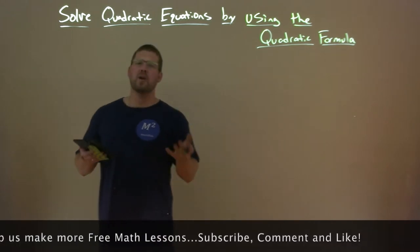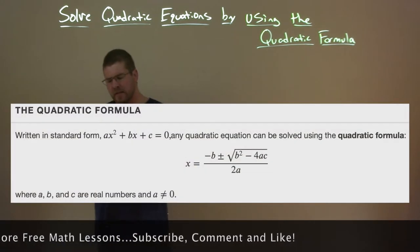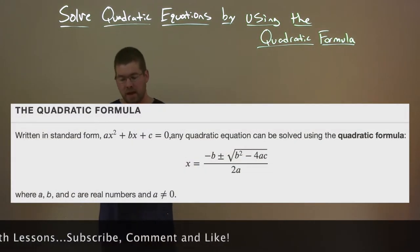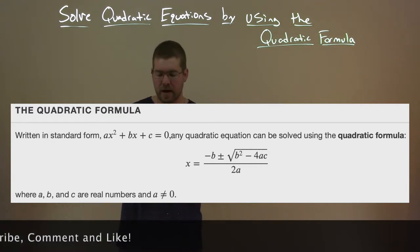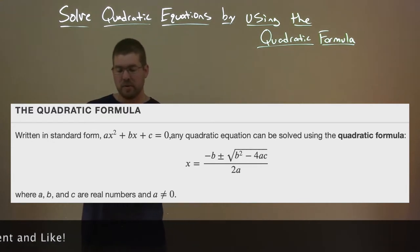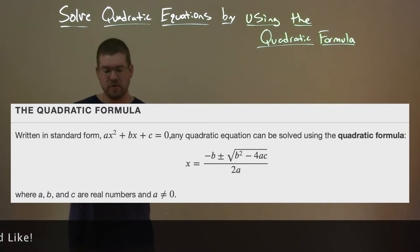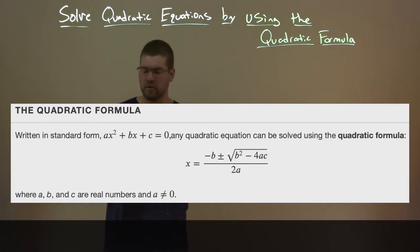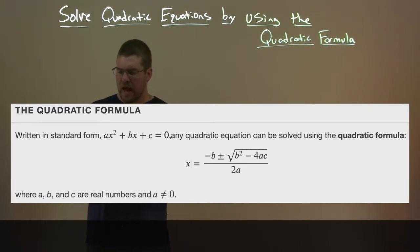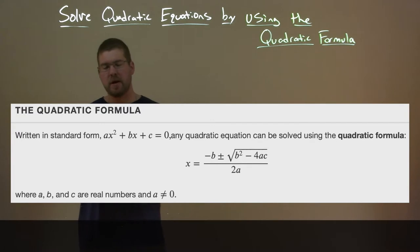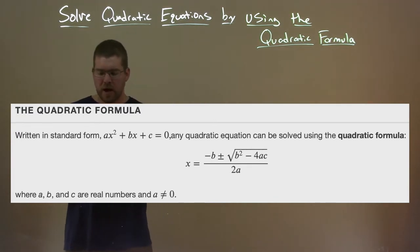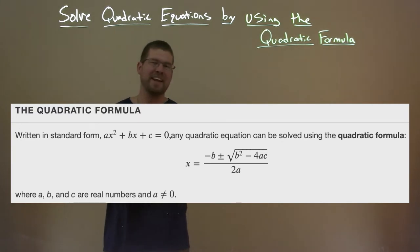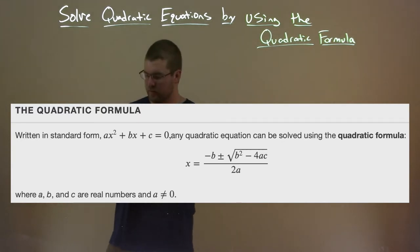So what is the quadratic formula? Written in standard form: ax squared plus bx plus c equals zero. Any quadratic equation can be solved using the quadratic formula, and this is why it's so useful. x equals negative b plus or minus the square root of b squared minus 4ac, all over 2a, where a, b, and c are real numbers and a is not equal to zero.